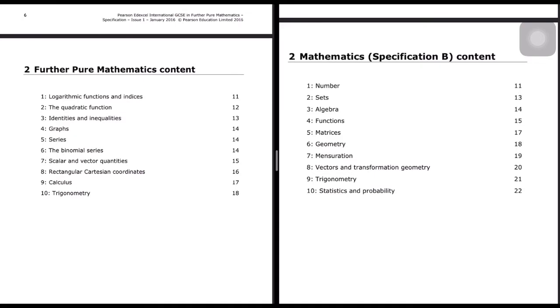If we see Mathematics Specification B, there is a big difference. It starts with numbers, simple arithmetic, sets, algebra, functions, matrices, geometry, mensuration, vectors and transformation, trigonometry, statistics, and probability.